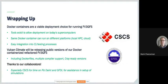In summary: Docker containers are a viable deployment choice for FV3 GFS. There are tools to allow deployment on today's supercomputers — Ceres and Singularity. You can use the same Docker container on different platforms. We integrate these Docker containers into our CI GitLab CI testing. We'll be releasing public versions of our Docker containers in the near future, including the Dockerfiles, multiple compiler support, and Cray-ready versions. Thanks to our collaborators, particularly CSCS for giving us time to run on Piz Daint and GFDL for helping us set up simulations.